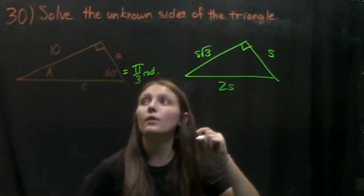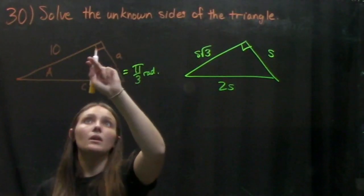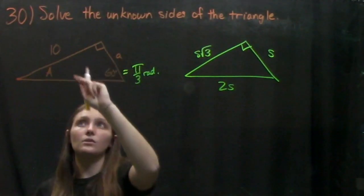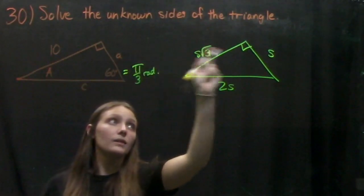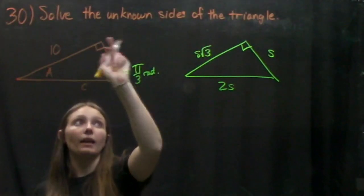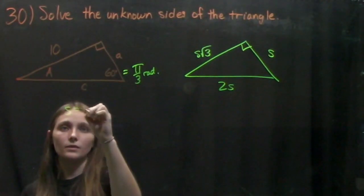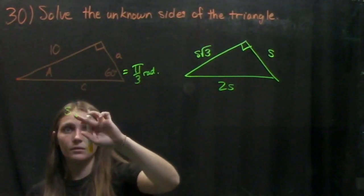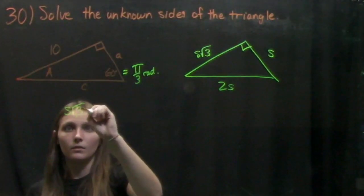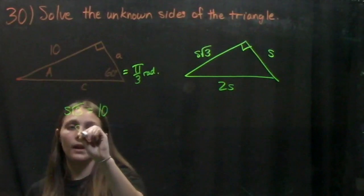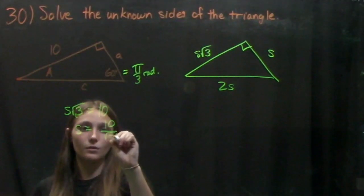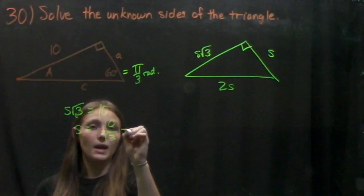If we're trying to find C and A, all we need to do is figure out what A is. We know that A is going to equal S, and S root 3 is equal to 10. So if S root 3 equals 10, we know that S equals 10 over root 3, which equals A.